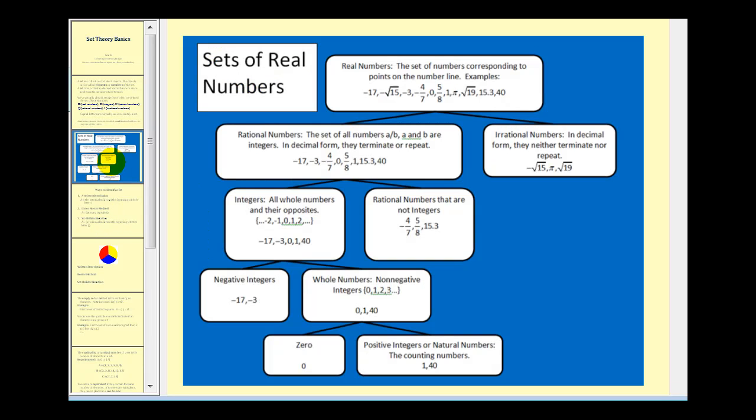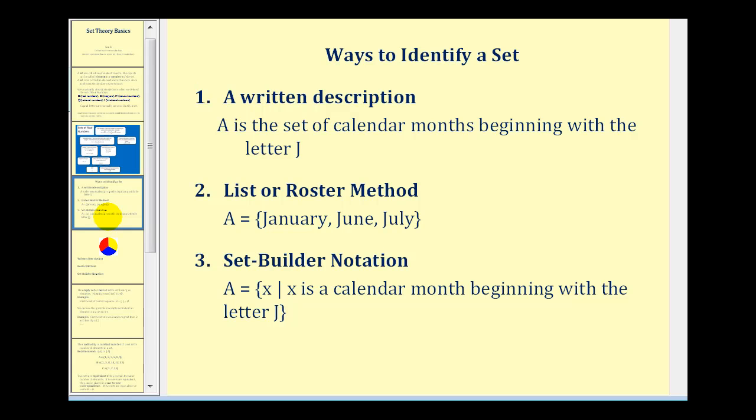So looking at our sets of real numbers again, notice that all real numbers are made up of rational numbers and irrational numbers. So we could call rational and irrational numbers a subset of real numbers but we'll talk about subsets in the next video. Right now let's focus on the different ways of identifying a set.